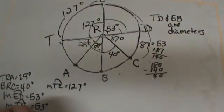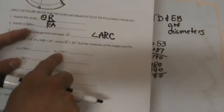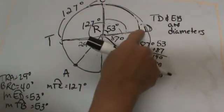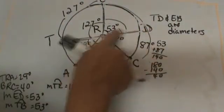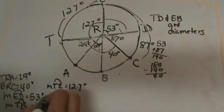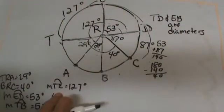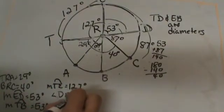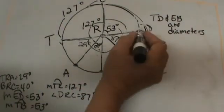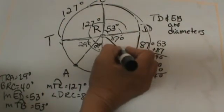So that is what we have so far. Now let's go over to the next column. So we are looking here. The measure of DRC, D to R to C. That one is too easy. DRC is just 87. Angle DRC is 87. That was given to us because the arc is the same as the angle.